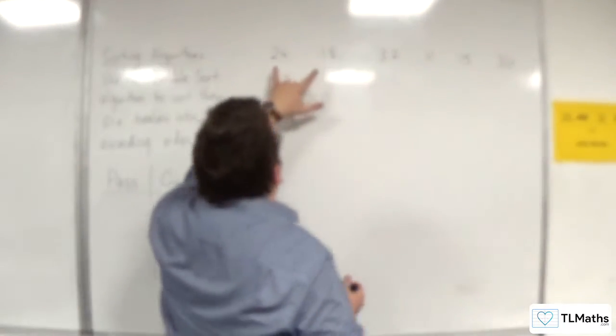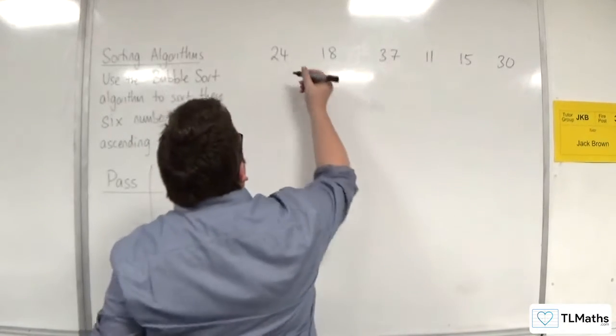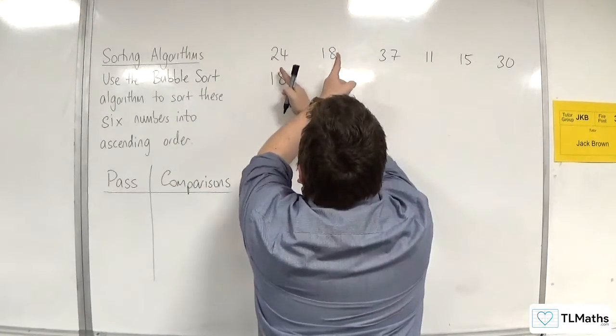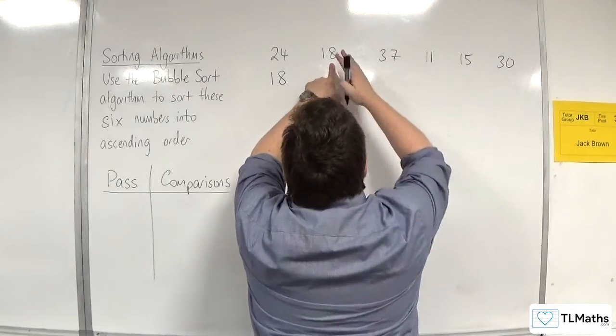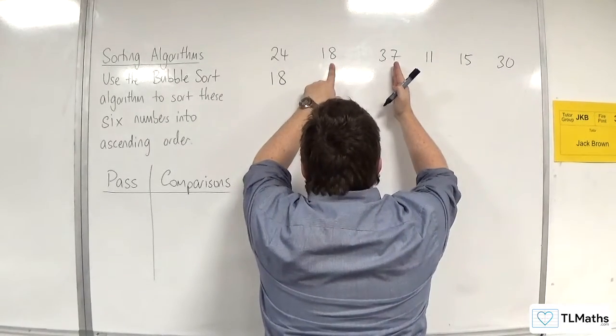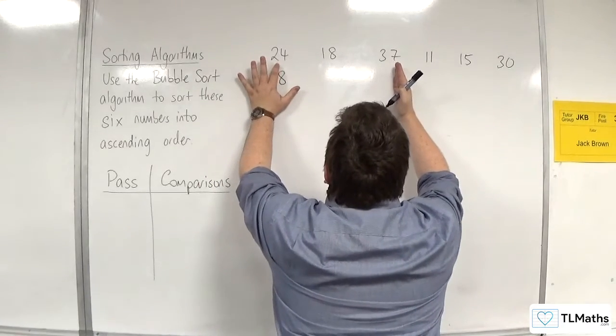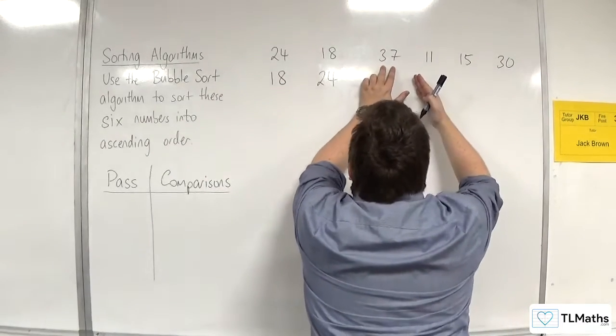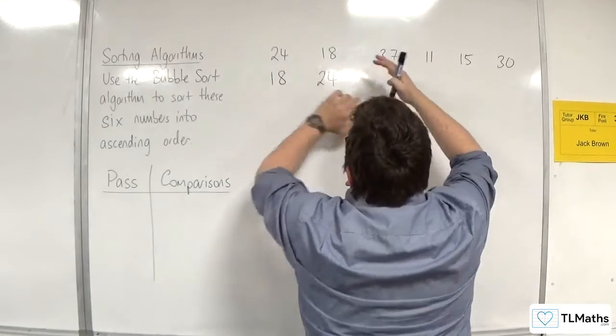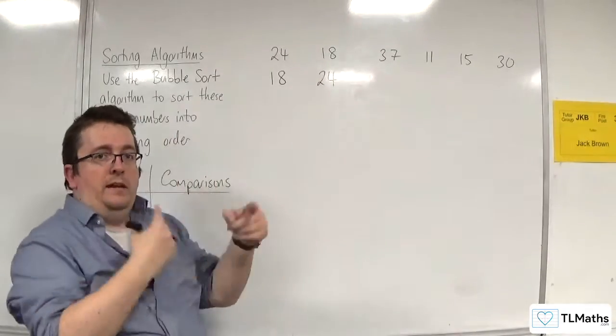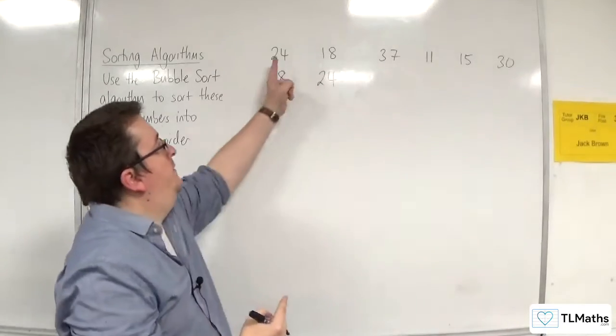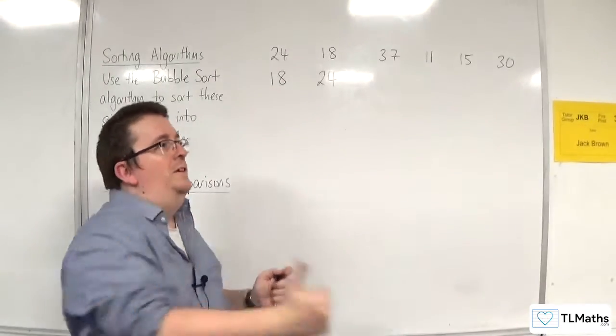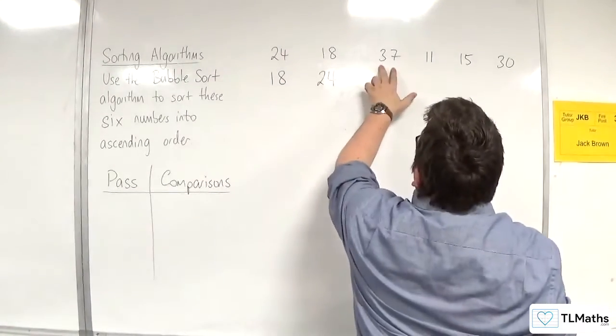So first of all, we compare 24 and 18. 24 is larger than 18, so 18 gets put to the left. You can imagine that these two have now swapped place. And we now have 24 here, and I'm going to compare 24 with 37. So I'm comparing the 24 with 37. 24 is smaller than 37, so 24 gets put in place. So now I'm working with the 37. 37 and 11. So essentially, as you work your way through, the larger number is the one that you push through. And if you meet a larger number along the way, you go over to that one instead. You go, oh, that's not the largest one, don't want that one anymore, and you keep moving on.